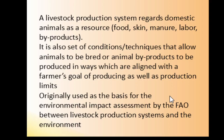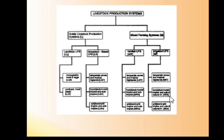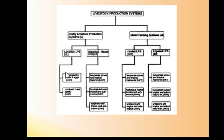Here is a diagram of livestock production systems. It is further divided into two: solely livestock production systems, identified as L, and mixed farming systems, identified as M. Under solely livestock production, there are two classifications: landless livestock production systems and grassland-based livestock production systems.